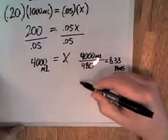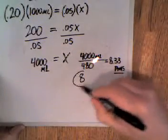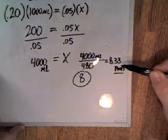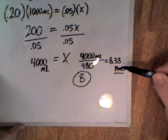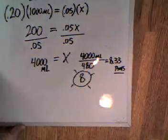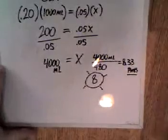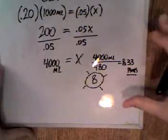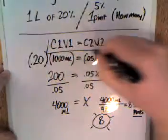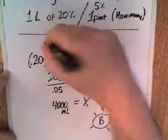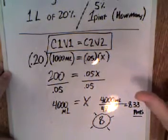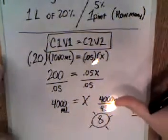This is why the answer is you could fill eight bottles. You could actually fill eight and a third, but the question asks how many pint bottles could be filled, so the answer is eight. This is the quickest and easiest way to do this problem. If you can just remember this formula for dilution, you can use it for other types of questions as well, but for dilution questions it seems to work the best.